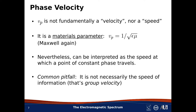From Maxwell's equations, we find that phase velocity is 1 over the square root of the product of two other materials properties, namely epsilon and mu. Epsilon is permittivity, which you can think of as a measure of the ability of a material to store electrical energy. We'll talk about the relevant values in just a moment.